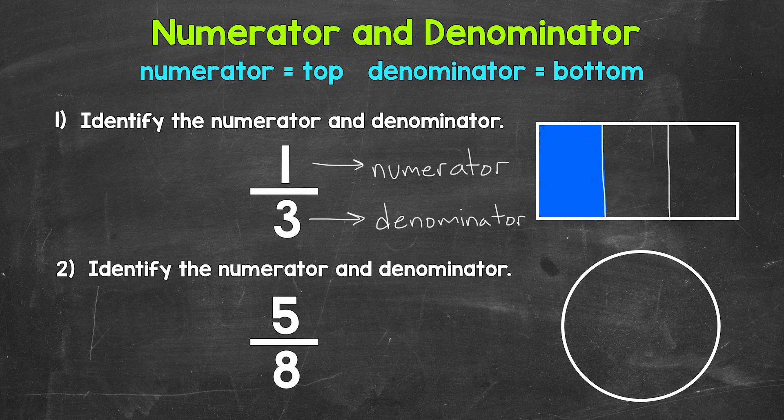And that's it. There's 1/3. 1 equal part out of 3 total equal parts. Let's move on to number 2, where we have 5/8. And we'll start by identifying the numerator and denominator.